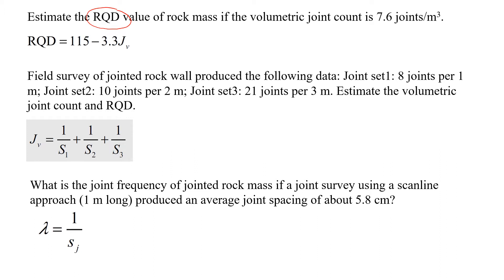We'll start with the first example. The first example asks to estimate the RQD value of rock mass if the volumetric joint count is 7.6 joints per cubic meter. Well, this one shouldn't be a problem if you know there is a correlation between RQD and the volumetric joint count.